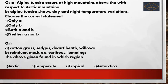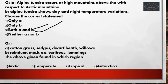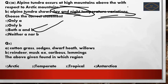Third question: alpine tundra. Statement A: alpine tundra occurs at high arctic mountains. Statement B: alpine tundra shows day and night temperature variations. The correct answer is option C — both A and B are correct. Alpine tundra does show day-night temperature variations and occurs at high mountains with respect to the arctic mountains.